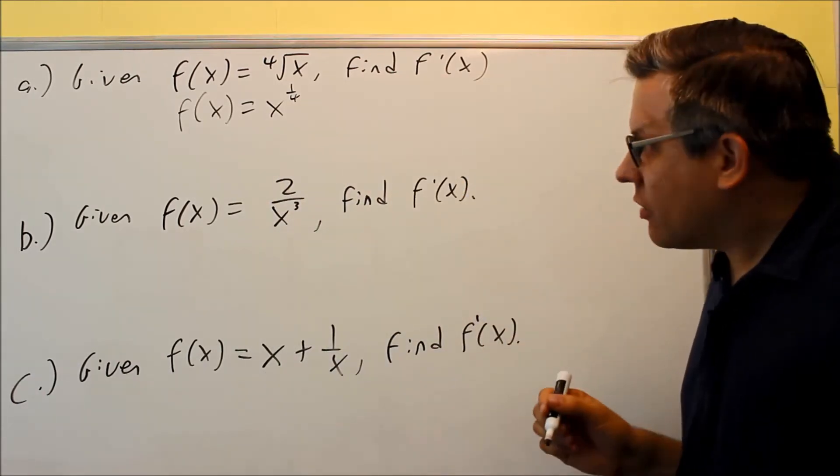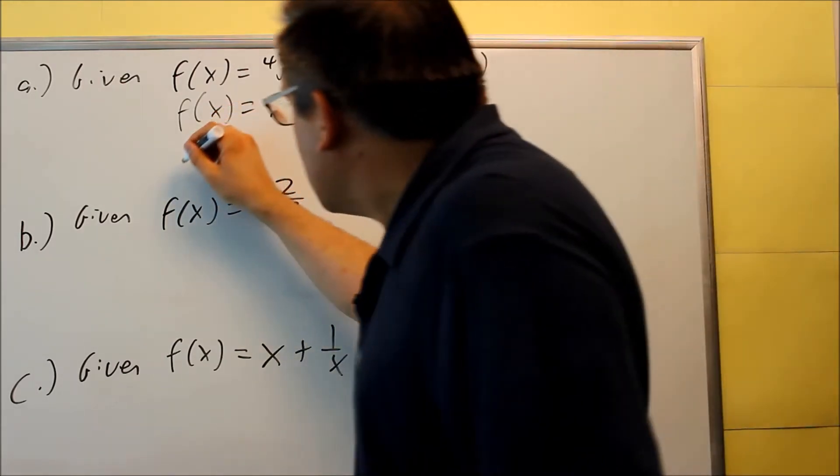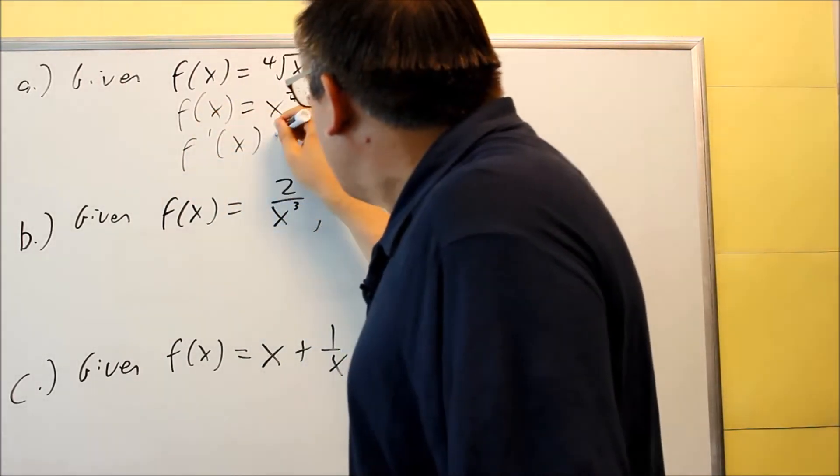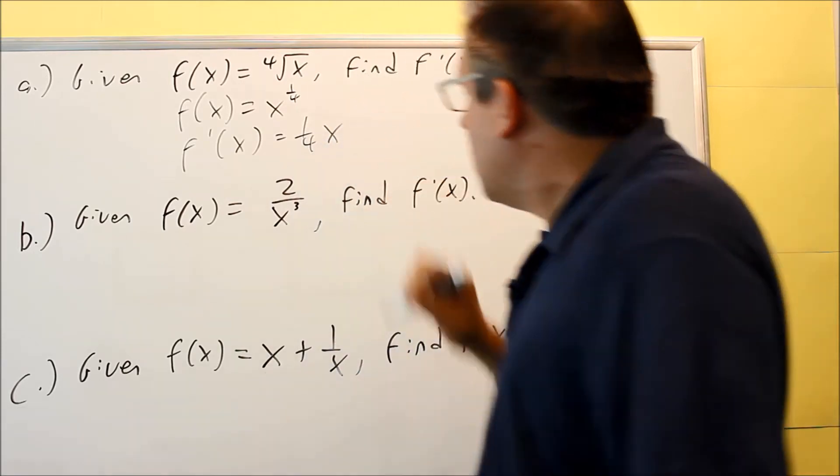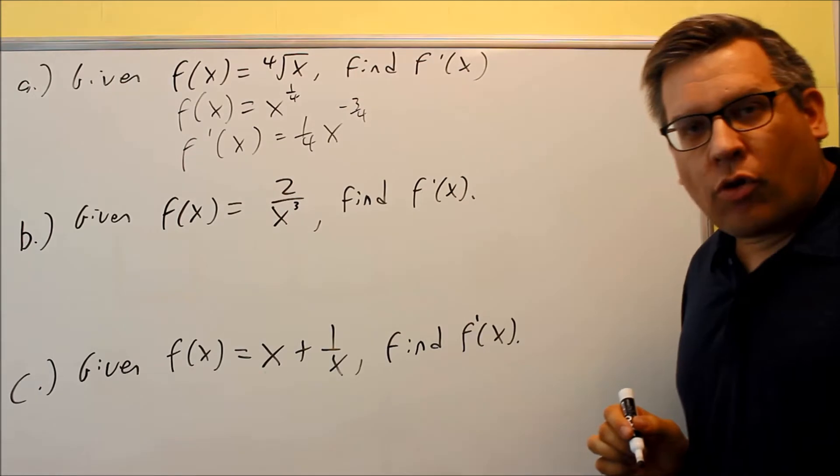Then you're going to apply the power rule. And you can still apply the power rule even if it's not a whole number. You can still do that with fractions. So let's do the derivative. 1/4th comes down, subtract 1 from the original power, and it's going to be negative 3/4ths.